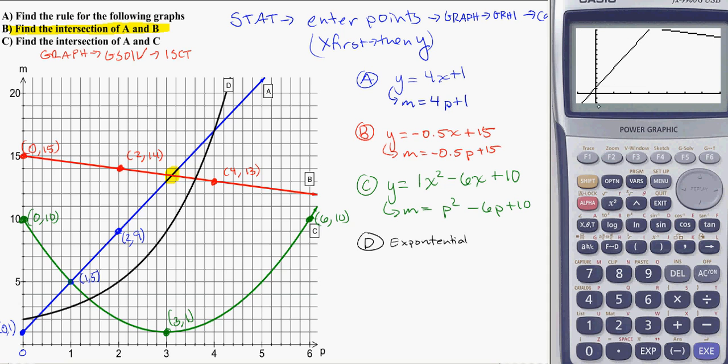And remember with Gsolve, you have to be able to see it. So right now you can tell I can't see where those two lines cross. A couple of ways to deal with it, but I could just arrow up until I can see that intersection. Hit Gsolve. And there's the ISCT for intersection point.